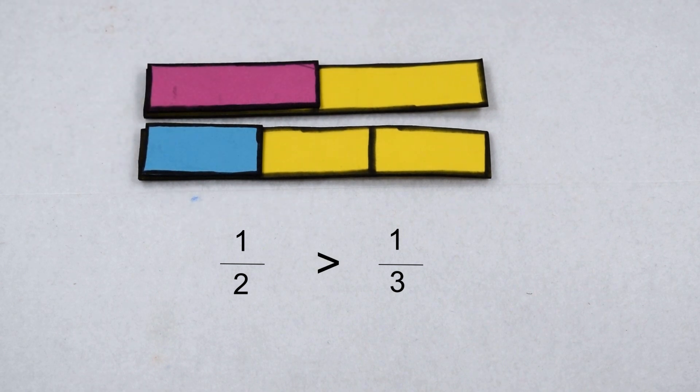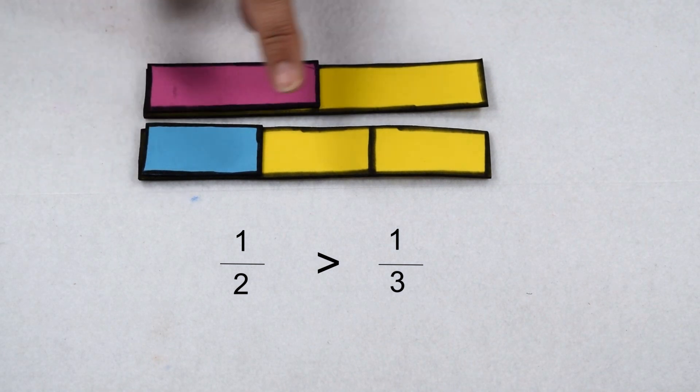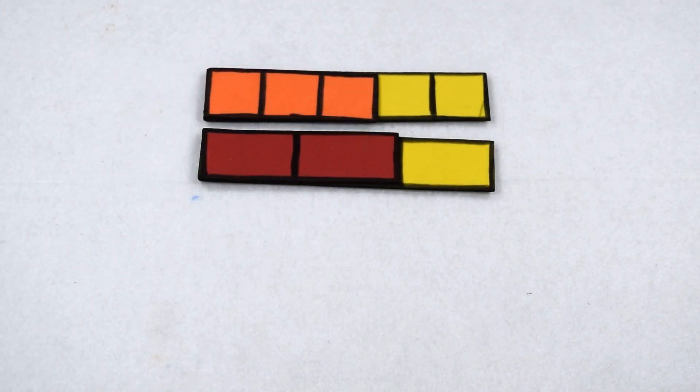In fact, any time we compare fractions with the same numerator, the one that has the larger pieces or the fewest total pieces on the bar is going to be larger than the one that has the smaller pieces or the larger number of pieces on the bar.